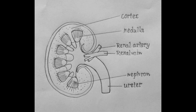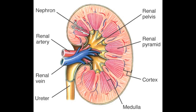Now we'll see the structure of the kidney. If we observe the cross-section or internal structure of the kidney, the outer zone is dark in color and is called the cortex, and the inner zone is pale in color and is called the medulla. Each kidney contains more than 1 million thin microscopic tubule-like filtering units called nephrons or uriniferous tubules. Each kidney is associated with a renal artery and a renal vein. The renal artery brings blood into the kidney.